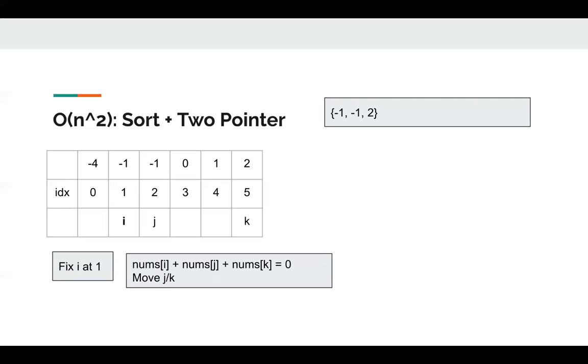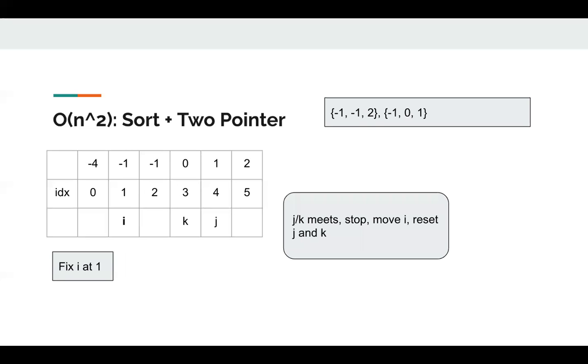Then we move j and k. Then we find the sum is also zero, so we can add them to our answer. Then we move j and k again. Then we can stop. Then we move i.